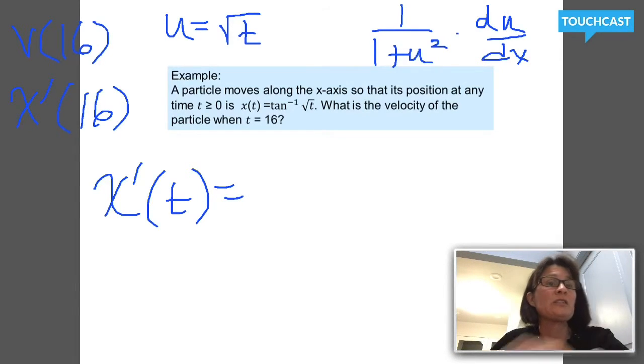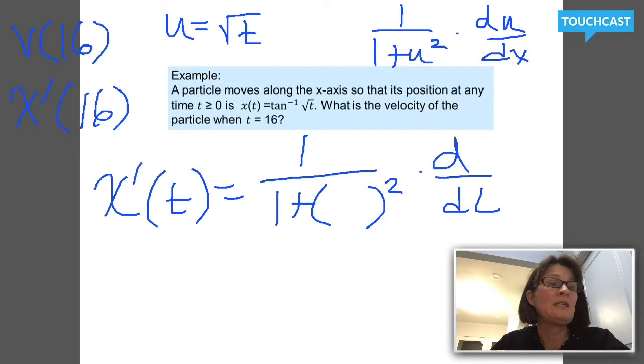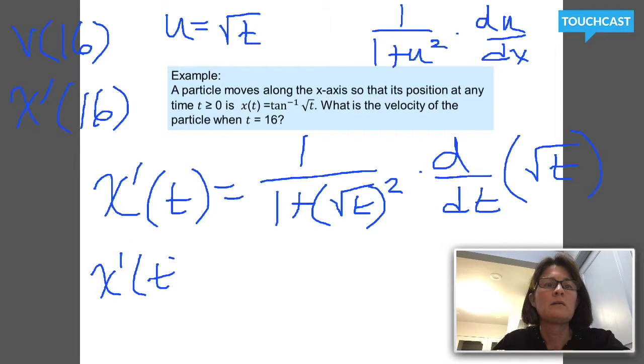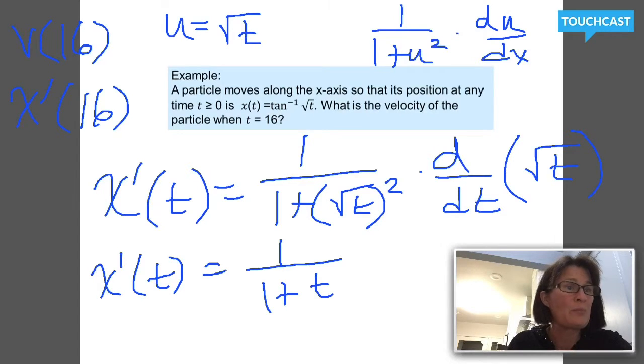The derivative of inverse tangent of something is 1 over 1 plus that something squared times the derivative, in this case with respect to t, of whatever that something is. In this case, my something is the square root of t. The derivative of the square root of t, we'll do that in the next line. My x'(t) is 1 over 1 plus square root of t squared is t. So to be very clear, that says 1 divided by 1 plus t.